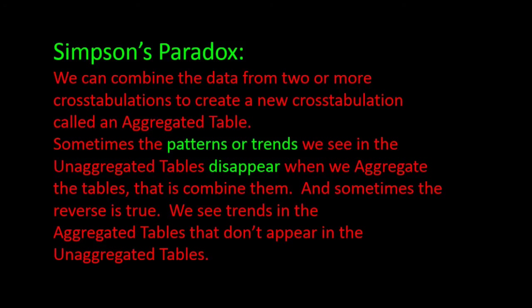One important issue that comes up with cross-tabulations is something called Simpson's paradox, which comes up when we deal with aggregated data. Aggregated data is a combination of data from other cross-tabulations put into a nice, neat table. Sometimes when we aggregate data, we see relationships or trends that we didn't see in the original separate cross-tabulations, and the reverse is true as well. When we see patterns or trends in data, we need to realize that these trends may not hold true when we look at the data from a different perspective.